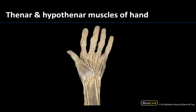We are looking at a palmar view, or an anterior view, of the hand. This is going to be lateral and this will be medial, because that first digit is always lateral with the fifth digit always medial when in anatomical position.